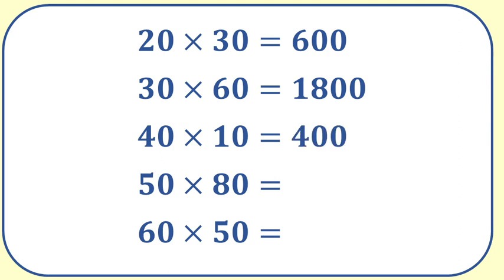50 times 80 equals 4000. 5 times 8 is 40 and then we multiply by 10 and by another 10 to get 4000. 60 times 50 equals 3000. 6 times 5 is 30 then we multiply by 10 and by 10 again to get 3000.